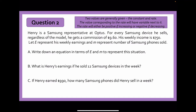For question two, let's work out what is our constant amount and what is the rate of increase or decrease. Henry is a Samsung representative at Optus — for every Samsung device he sells he gets $9.60 extra per device. His weekly income is already $750, so that's the base amount, and it increases by $9.60. His total earnings equation is E equals 750 plus 9.60M, where M is the number of Samsung phones sold.